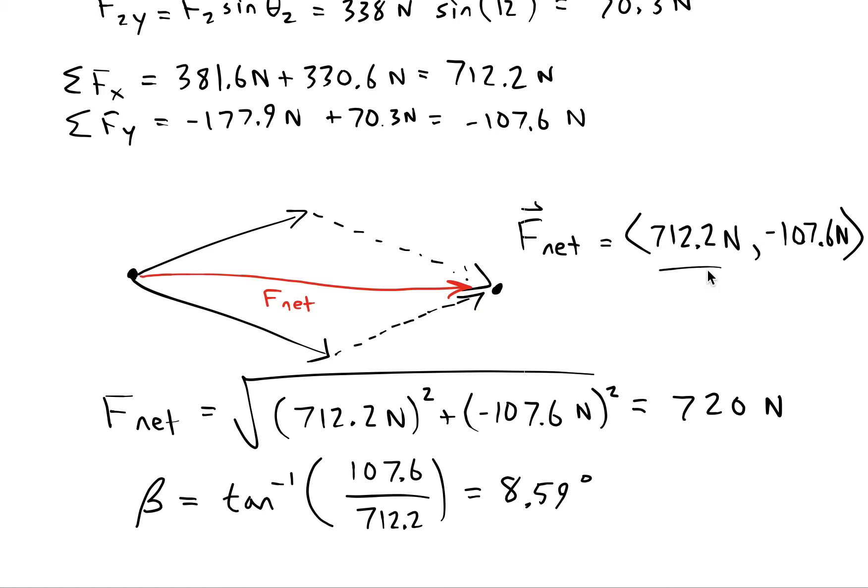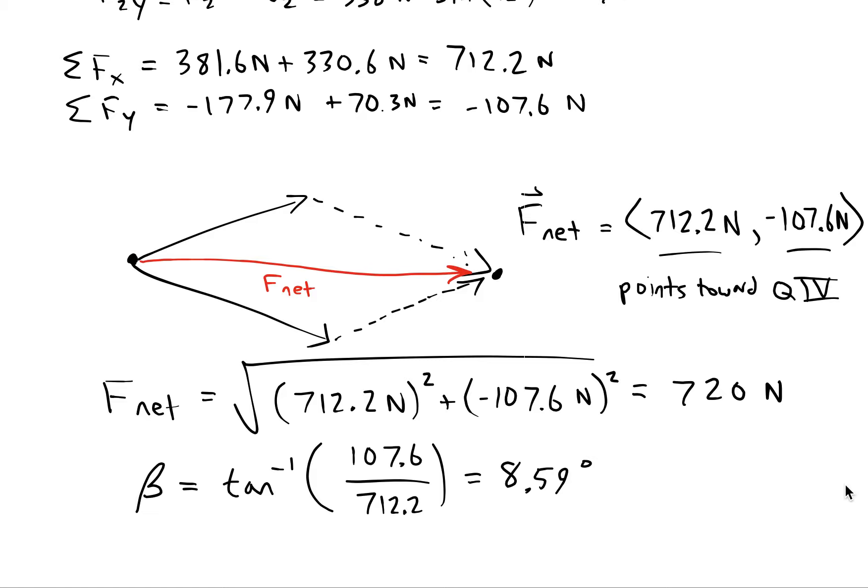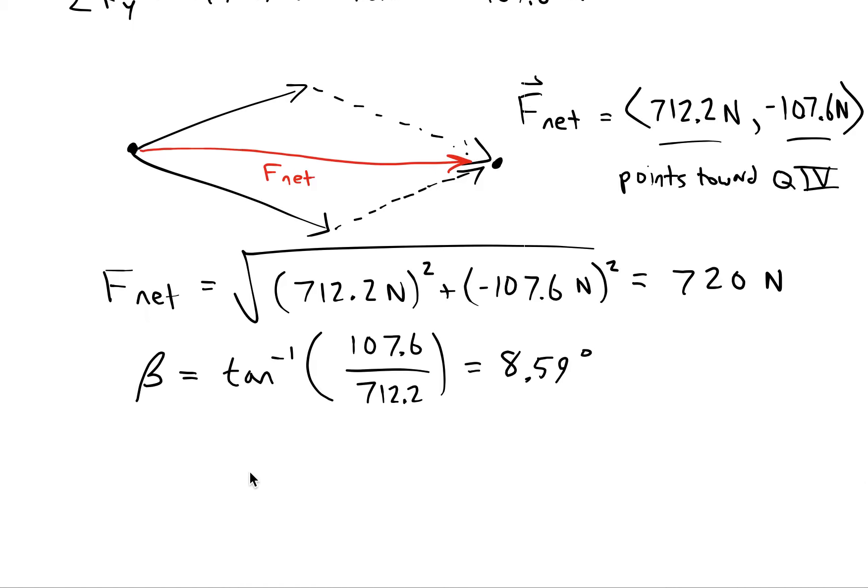But I can tell from my components that we're pointing in quadrant 4. We're pointing over and down, so that means we want to use the formula that theta in standard position will be 360 minus beta.